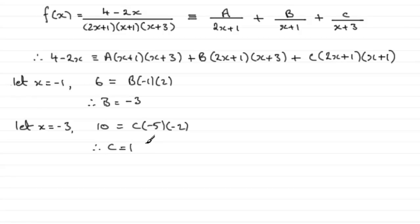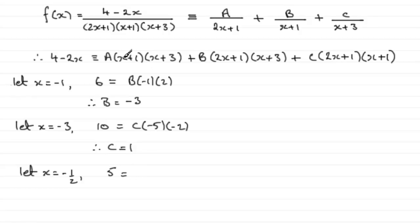For the last constant, we make the (2x+1) bracket equal zero by letting x = -1/2. Substituting: 4 minus 2(-1/2) = 4 + 1 = 5. For the A term: (-1/2 + 1) = 1/2 and (-1/2 + 3) = 5/2, giving A times (1/2)(5/2). Putting -1/2 into the B bracket makes it zero, and -1/2 into the C bracket also makes it zero, so those terms drop out.